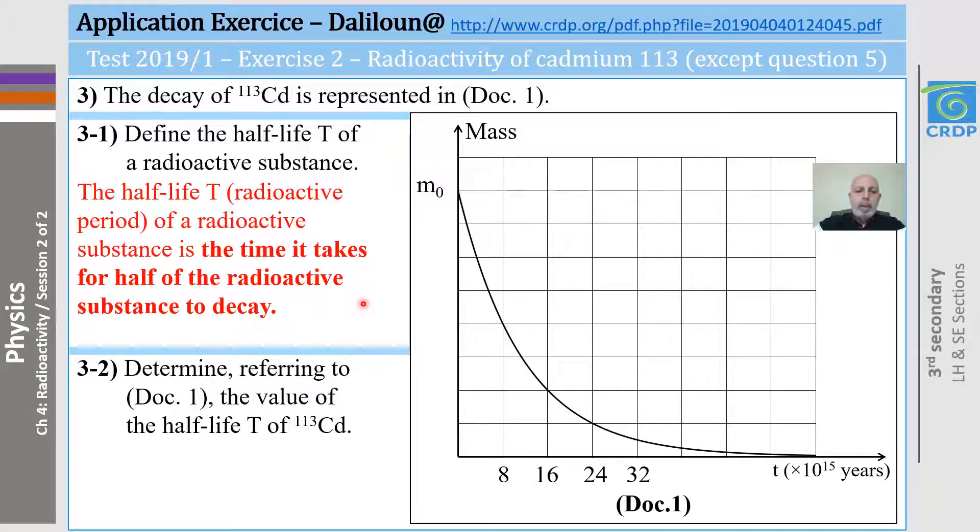And then, let's go to the second question. Determine, referring to document one, the value of the half-life t of cadmium-113. I remind you that for t equals the half-life t, the remaining mass of the radioactive substance is equal to m0 over 2, m0 being the initial mass. The initial mass corresponds to 1, 2, 3, 4, 5, 6, 7, 8 divisions. So, half of it corresponds to 4 divisions.